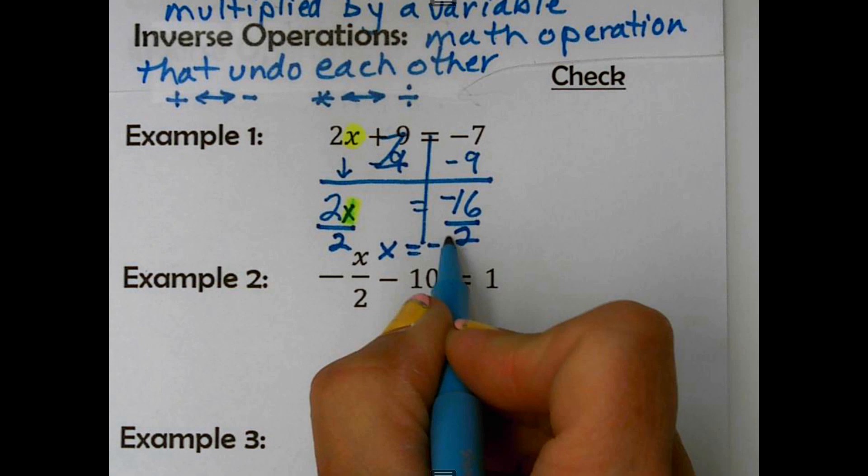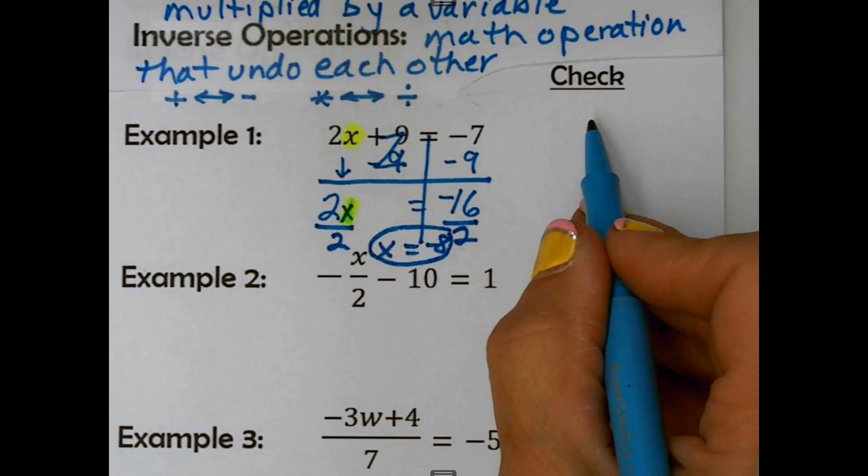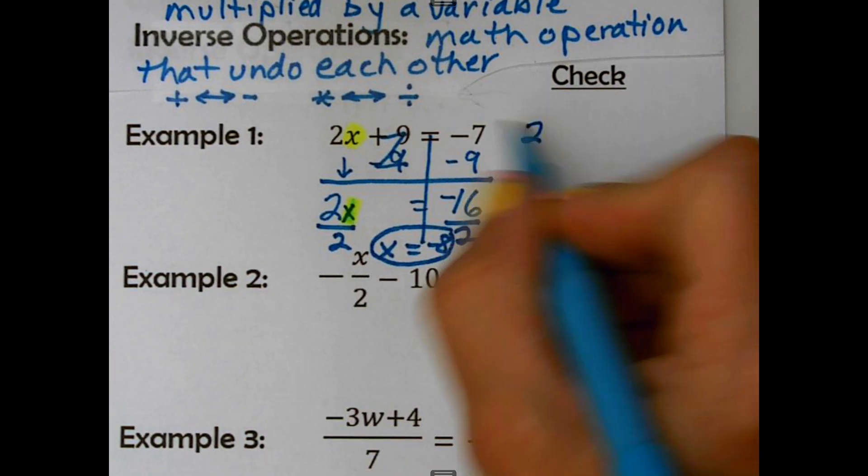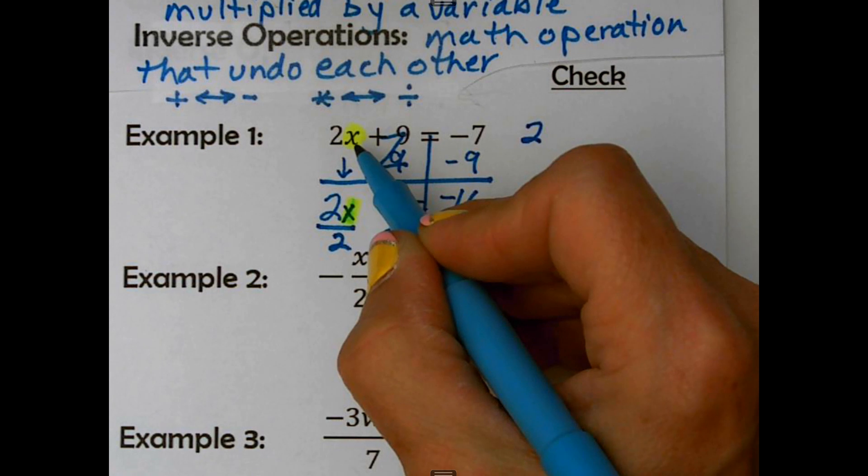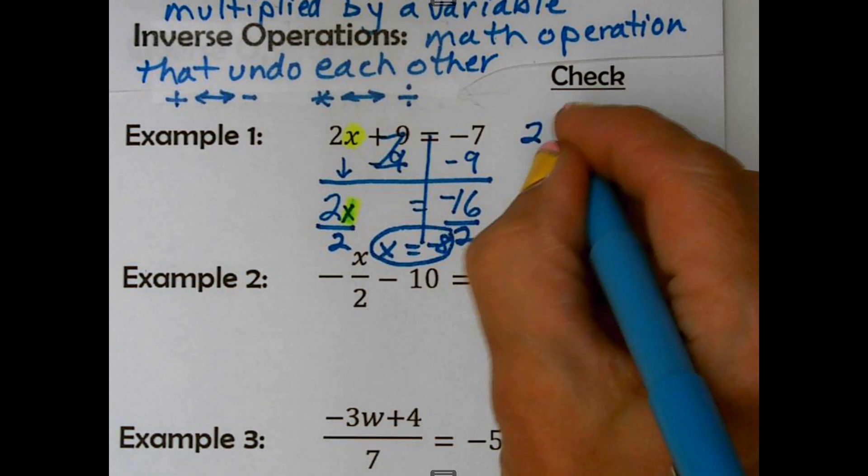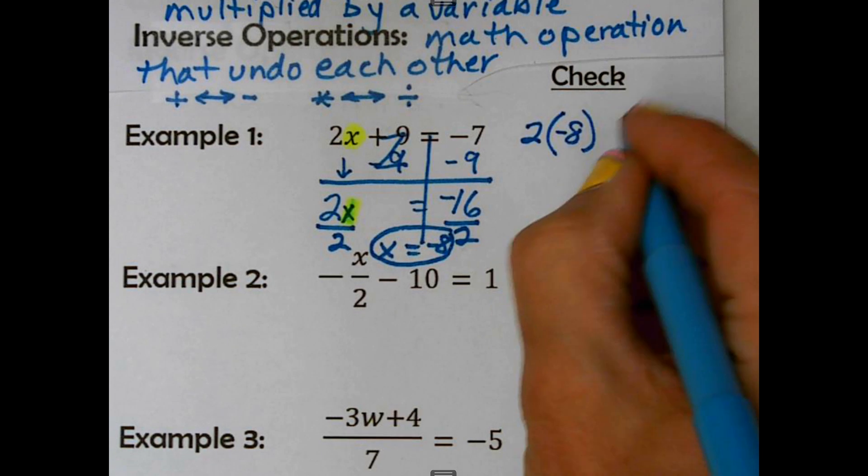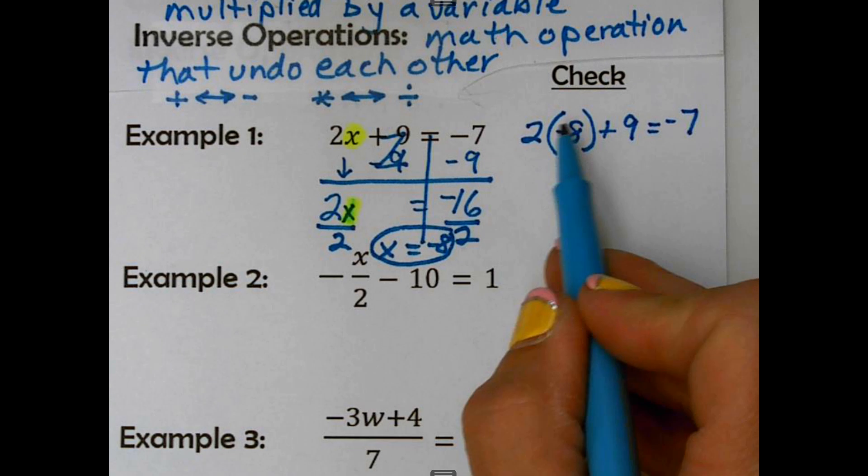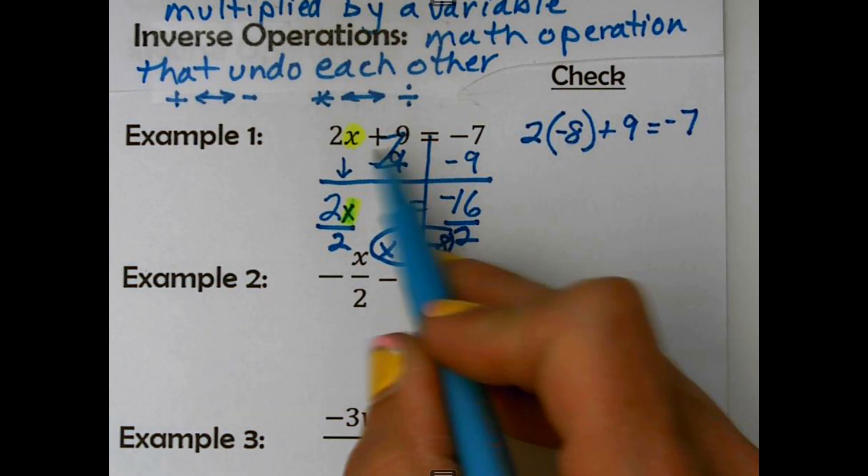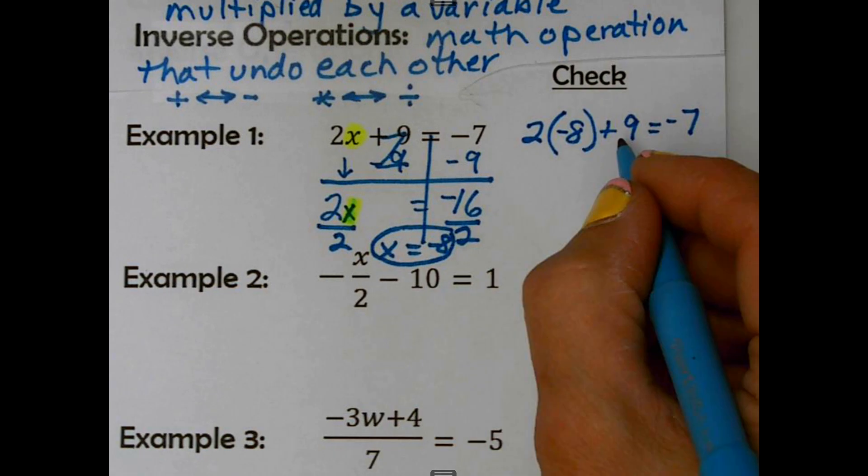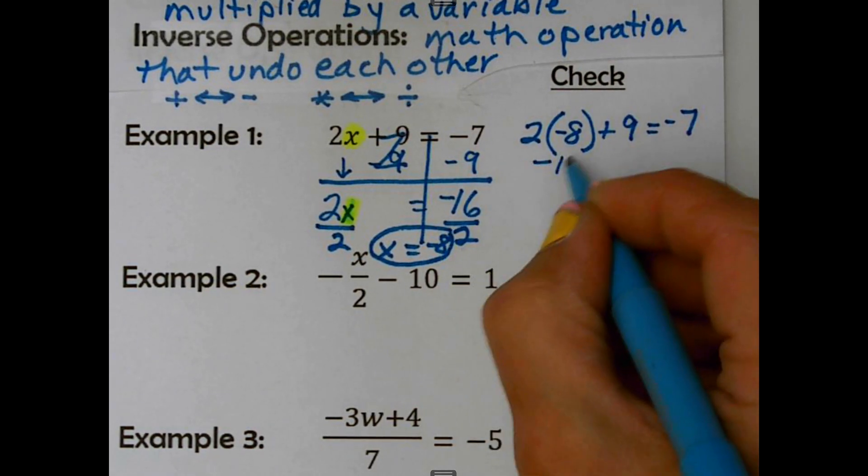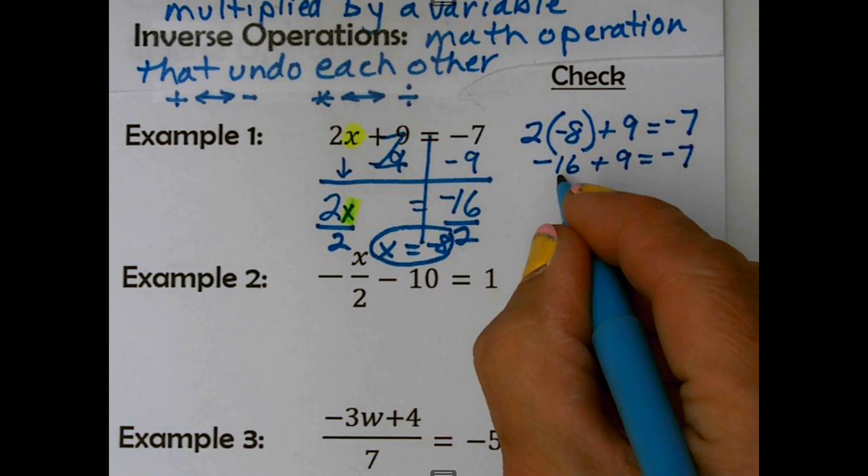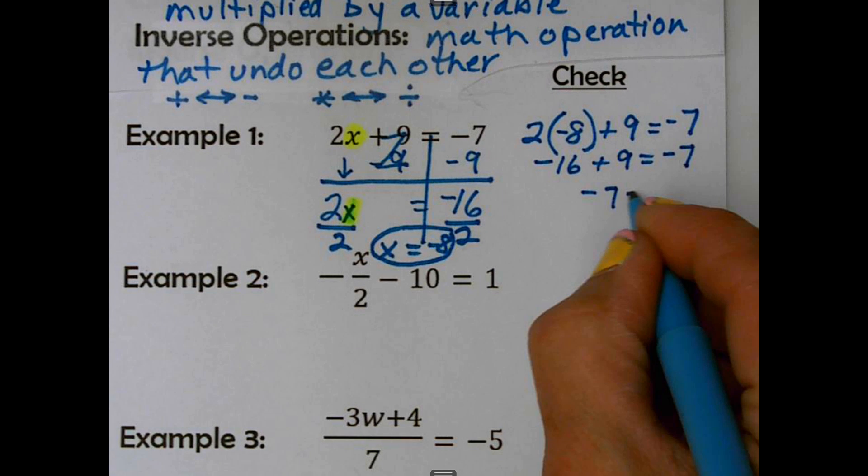I'm going to go over how we check this. So I'm going to write the original equation. Anywhere I see my highlight x, I am going to put my answer in parentheses. Plus 9 equals negative 7. This is the original equation, except I have substituted negative 8 in for x. Now, we just follow order of operations. 2 times negative 8 is negative 16. Plus 9 equals negative 7. There's our check. Negative 16 plus 9 is negative 7. And so we know negative 8 is the correct answer.